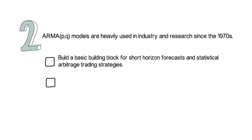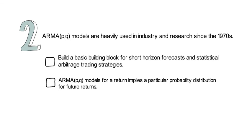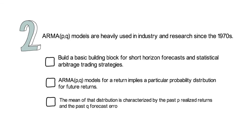For our course, it's important that you realize that ARMA(p,q) models for a return imply a particular probability distribution for future returns. The conditional mean of that distribution is characterized by the past p realized returns and the past q forecast errors.